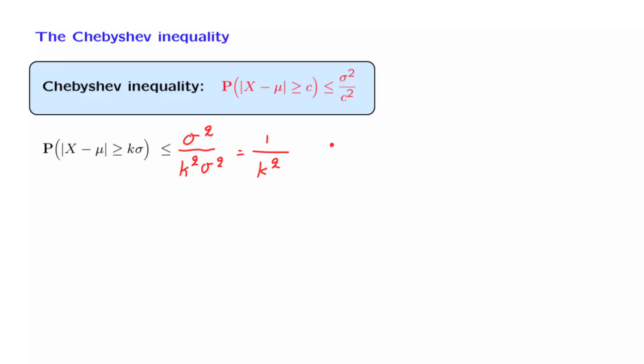So what this is saying is that if you take, for example, k equal to 3, the probability that you fall 3 standard deviations away from the mean or more, that probability is going to be less than or equal to 1 over 9. And this is true no matter what kind of distribution you have.